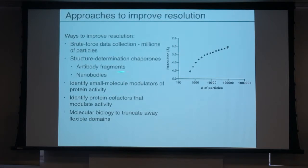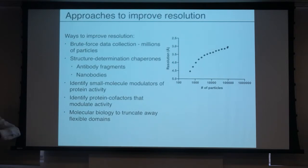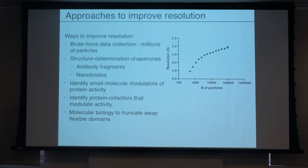Another thing you can do is use structure-determination chaperones — antibodies or nanobodies raised specifically for your protein or complex of interest. Say you have a labile interaction domain: if you can find a nanobody that binds to it, particularly if it binds both components, this might stabilize that interaction. Rather than having an entire movement, it may limit it to only five degrees, and that's something you might be able to deal with. For small proteins, these antibodies or nanobodies also increase the molecular weight and help with alignment, allowing you to go from lower to higher resolution just because you're now working with something effectively larger.